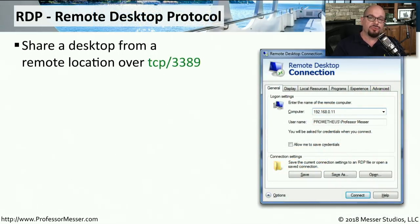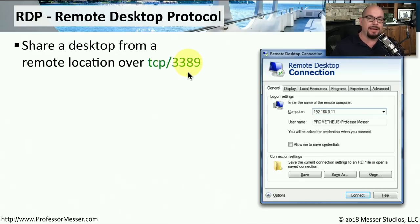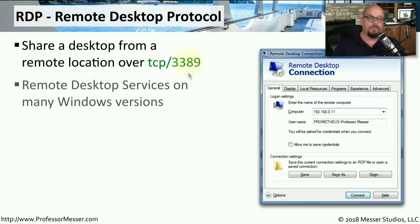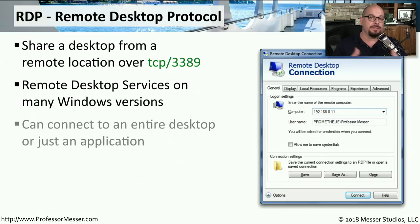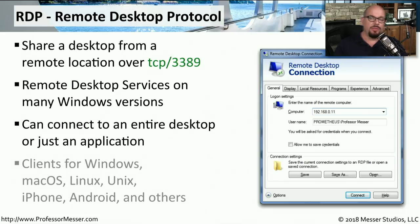If you've ever needed to view or take control of someone's desktop across the network, then you've needed to use RDP, or the Remote Desktop Protocol. This uses TCP port 3389 to provide that remote control functionality. RDP is available on many different Windows servers and allows you to either view the entire desktop of the remote system or view just a single application running on that remote system. There are many different clients available, including Windows workstation, Mac OS, Linux, and many others.